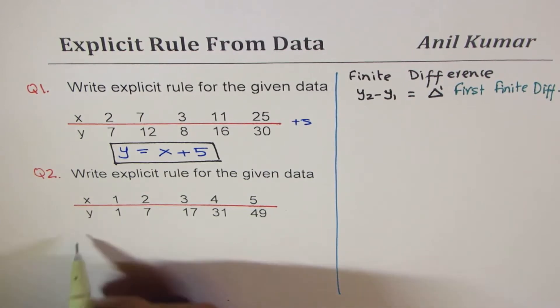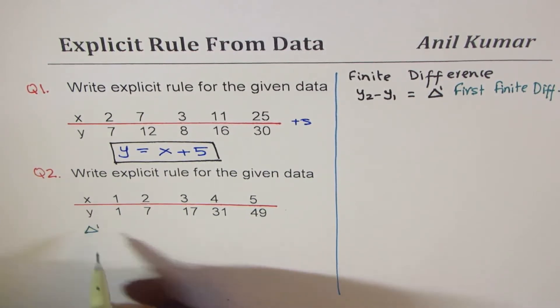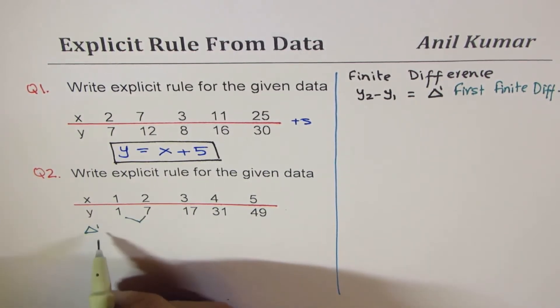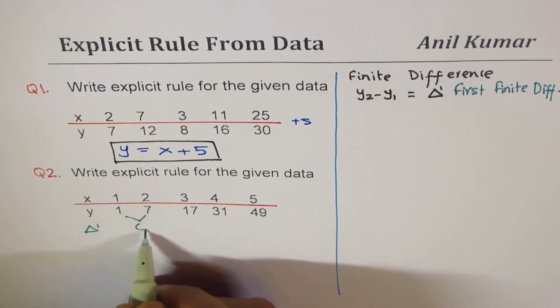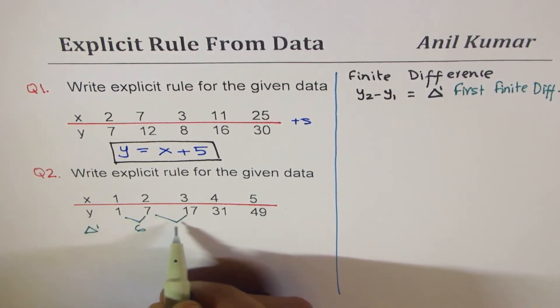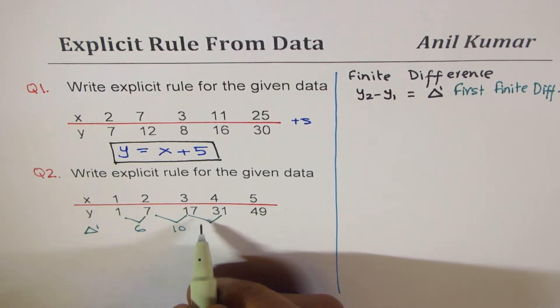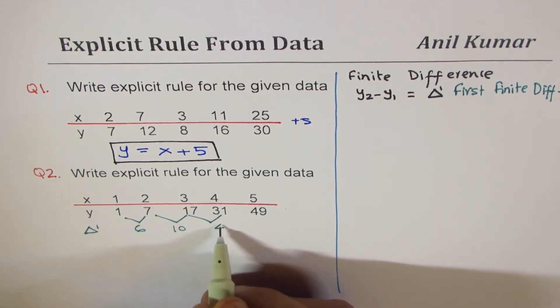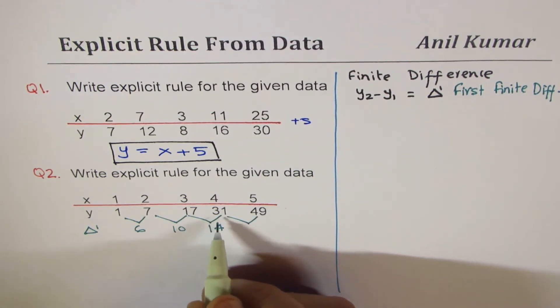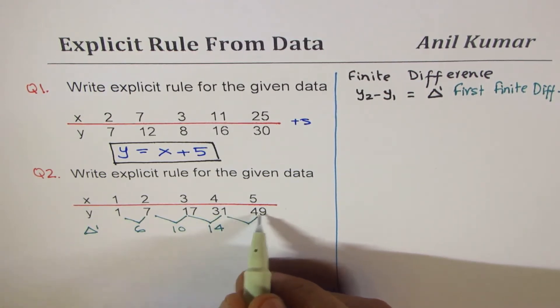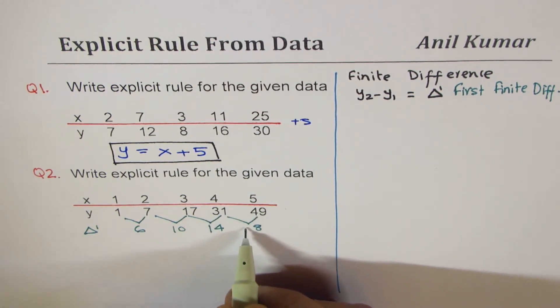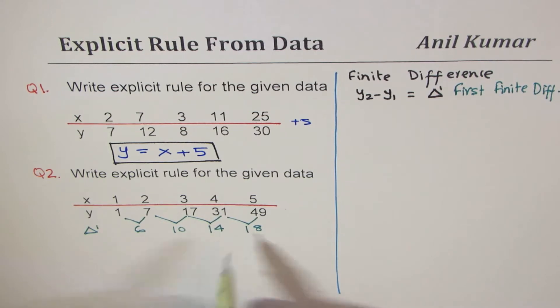So let's find the first finite difference: 7 minus 1 is 6, 17 minus 7 is 10, 31 minus 17 is 14, 49 minus 31 is 18. Definitely, as expected, it is not a linear function.